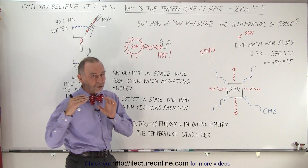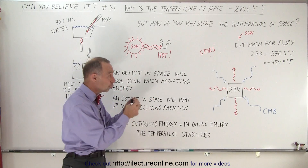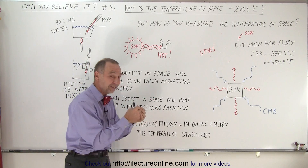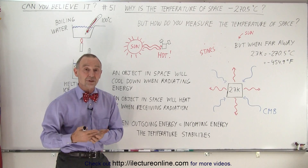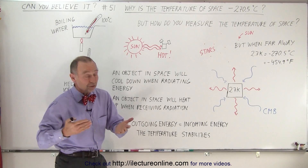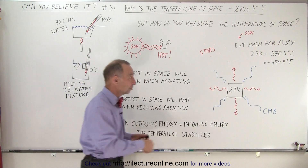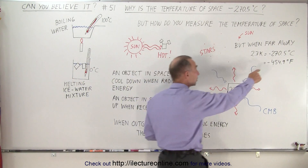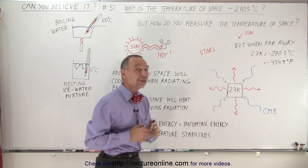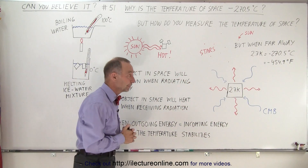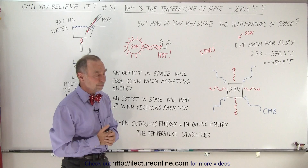At some point, when the amount of radiation given off equals the amount received, it will be at a stable temperature. Far away in space, that stable temperature will be 2.7 Kelvin — 2.7 degrees above absolute zero — which is minus 270 degrees Celsius or minus 455 degrees Fahrenheit. Really cold.